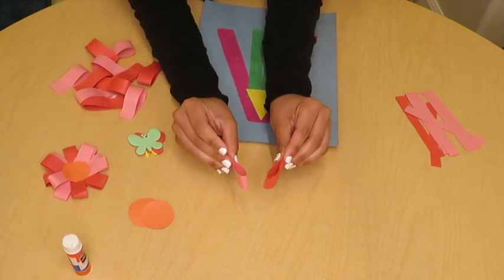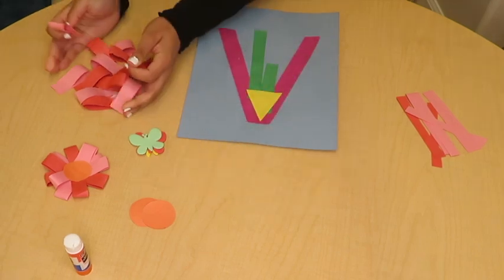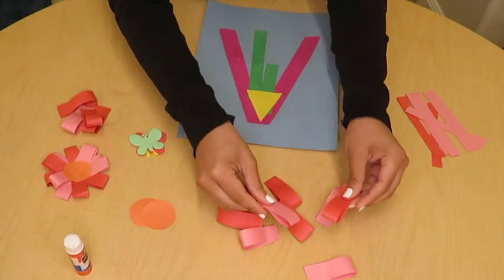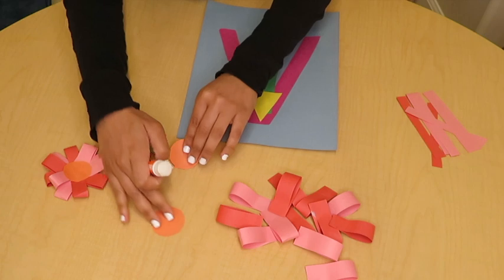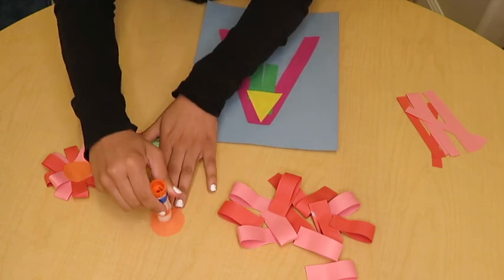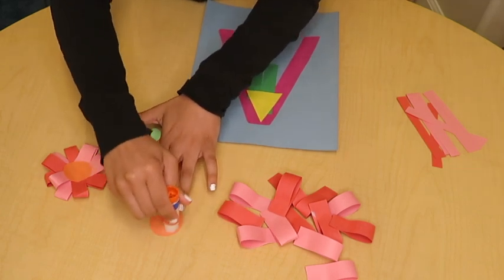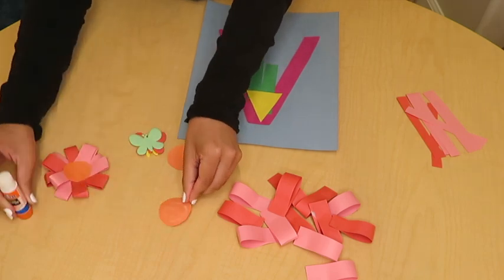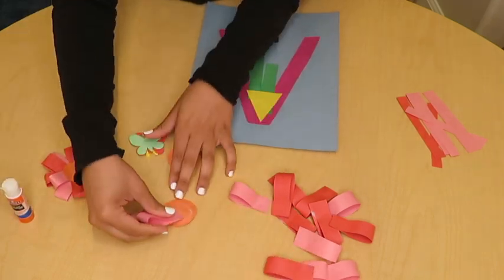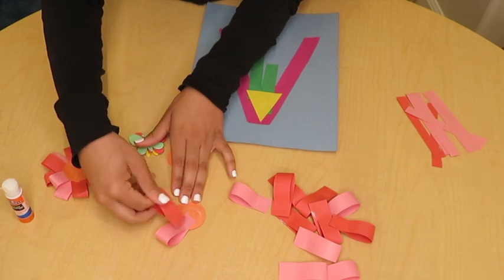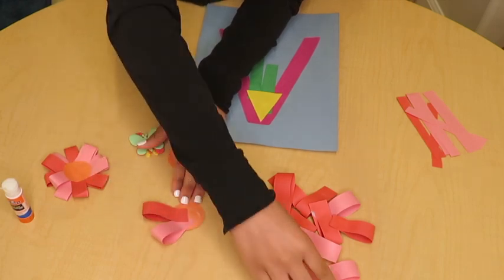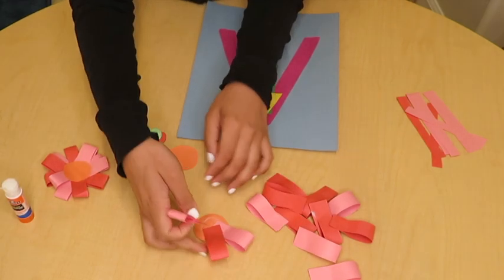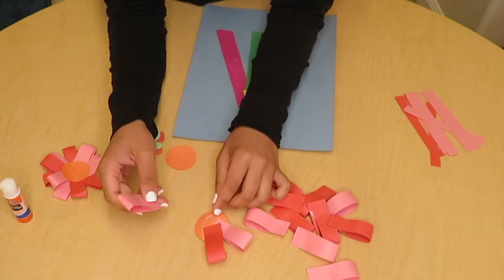So once we've done that with a couple of our flowers, here I have all of mine. I'm going to take one of our circles, and I'm going to put glue in the middle of our circle. And I'm just going to start gluing down the little flower petals that we've just glued. And I'm just going to put it all around in the shape of a circle. And as you can see here, I'm alternating colors so that it's more of a pattern.